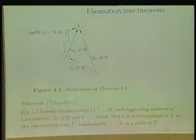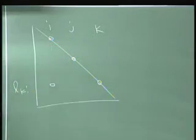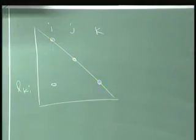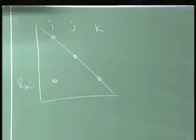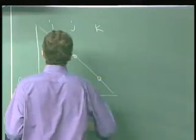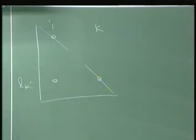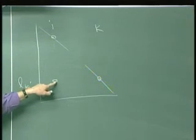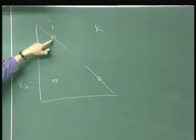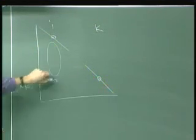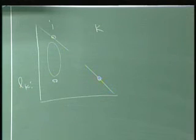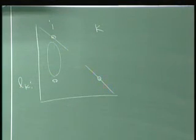The proof is by induction on the length of the path. For the base case, let's suppose that k is the first off-diagonal, so the path length is one. Let's suppose that all entries above are zero. If all of that is zero, then i is the child of k, and there's certainly a path from i to k. Done. That's the base case.